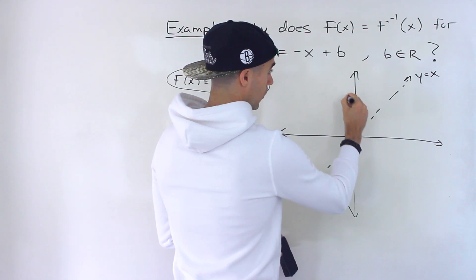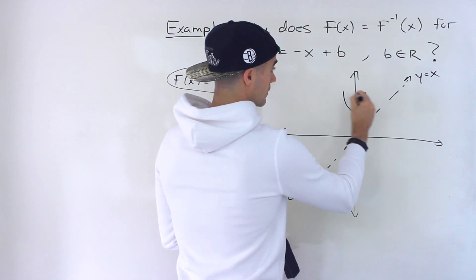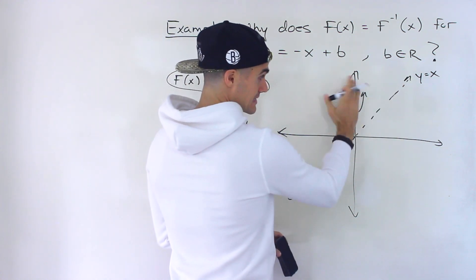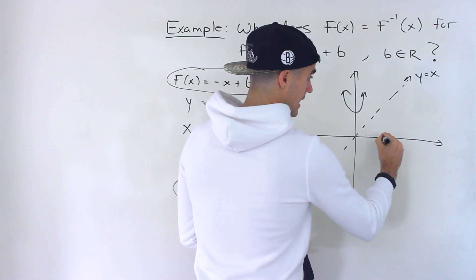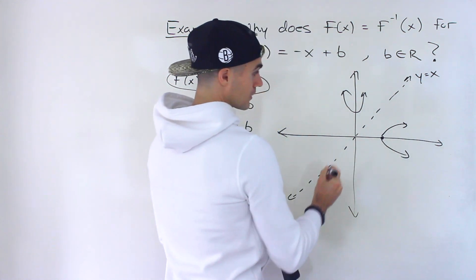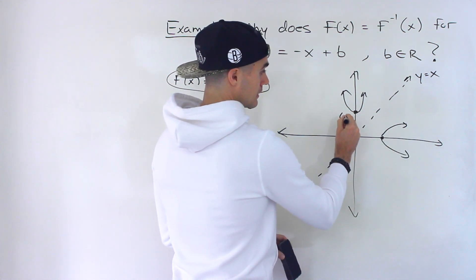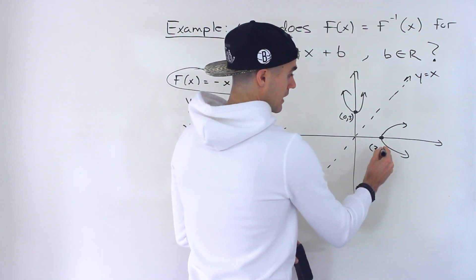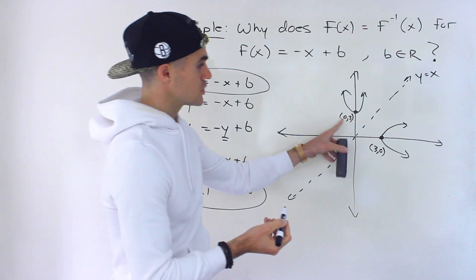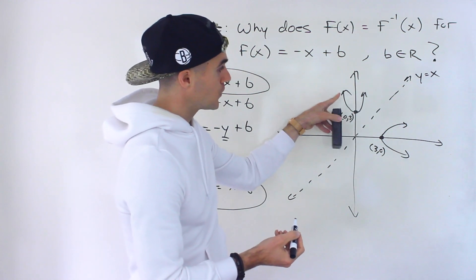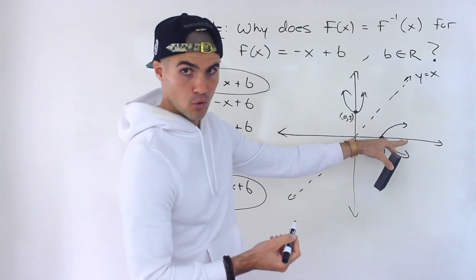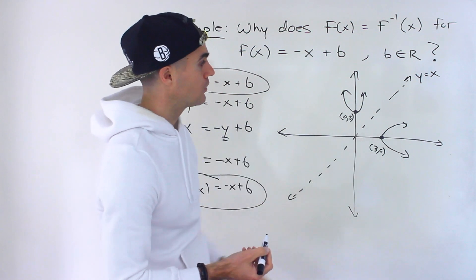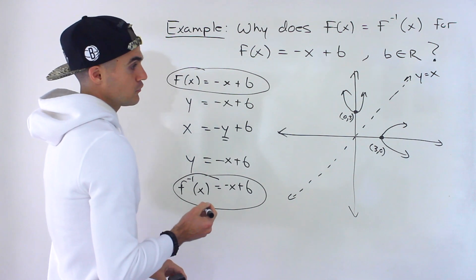For example, if we have a quadratic over here, and we reflect that over this line, we'd end up with a sideways parabola over here. So let's say the vertex was at zero and three — this would be at three and zero. Interchanging those coordinates, reflecting this over the line y equals x, we end up with this sideways parabola. We've gone over that in videos before.